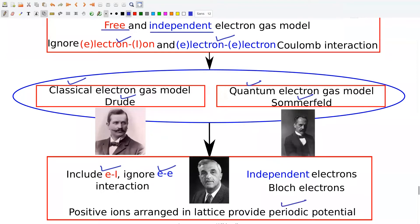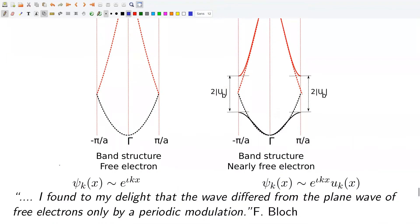Such electrons are known as Bloch electrons. The modification needed to go from free electrons to electrons in a periodic potential turns out to be very simple. In the case of free electrons, the wave function is given by a plane wave. In the case of Bloch electrons, the wave function is a plane wave times some function which has the periodicity of the lattice. Let me quote the words of Bloch himself: "I found to my delight that the wave differed from the plane wave of free electrons only by a periodic modulation."